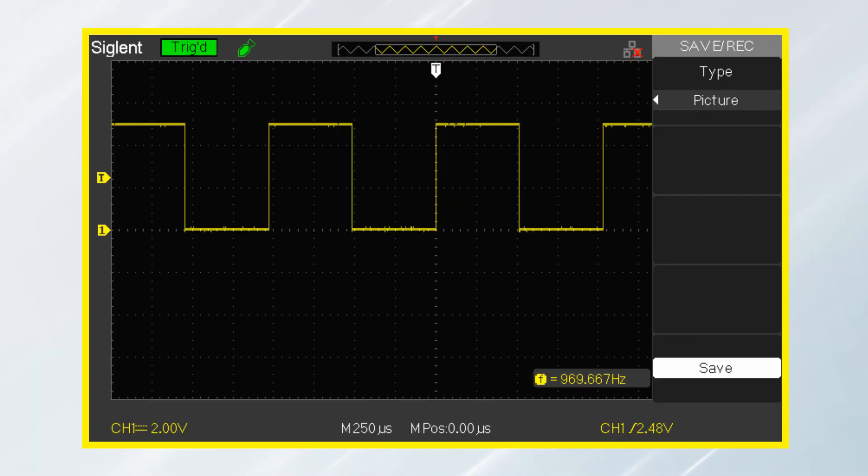This is the signal on the scope and you can see that the frequency is 970 Hz. There's a 3% error from the nominal frequency value.